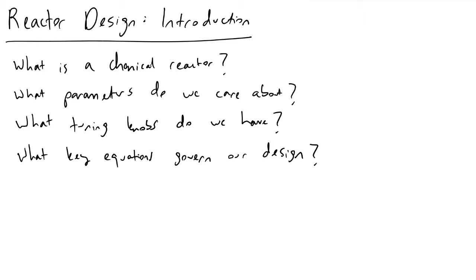The very first thing to address in a reactor design class is agreeing on a definition of what a chemical reactor is. At the end of the day, it is essentially just a control volume in which we are changing, we're transforming chemical species from one into another.